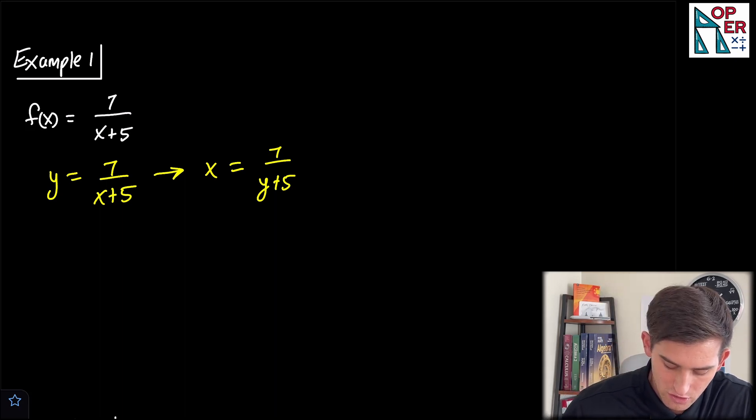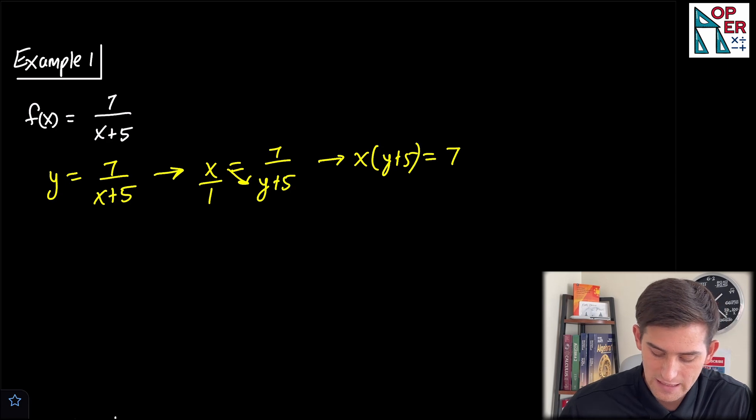Here we could cross-multiply. So we could do x times y plus 5 is equal to 7, and now we can divide both sides by x. So now we have y plus 5 is equal to 7 over x, and now let's subtract 5.